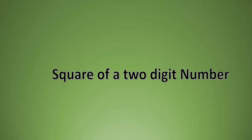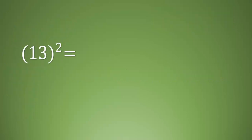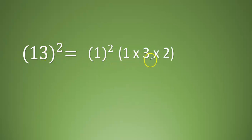Hi, welcome to another topic: square of a two-digit number. Let's see 13 square. The method is: the square of 1 we will write first, then multiply these both digits and multiply with 2. So it means 1 into 3 into 2, then square the unit place.